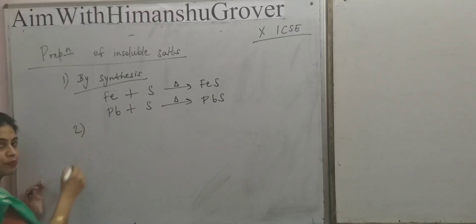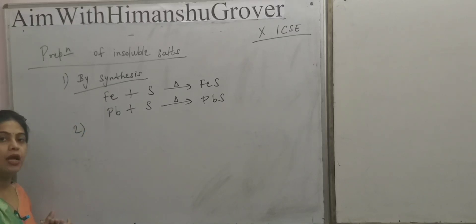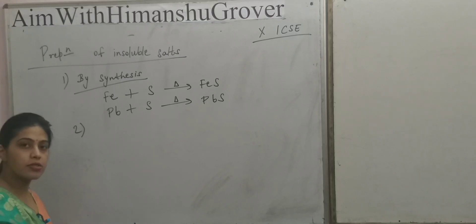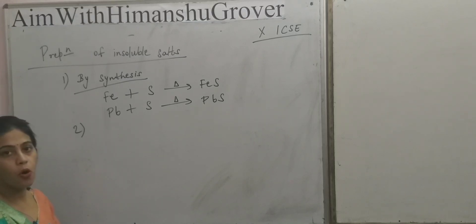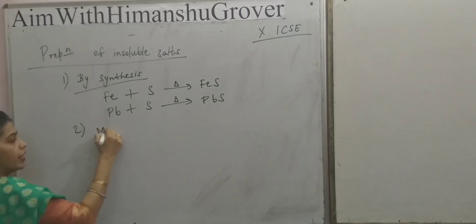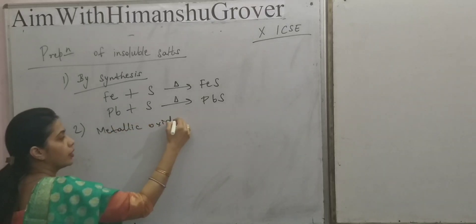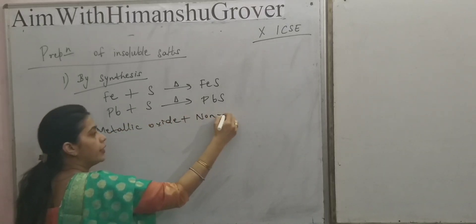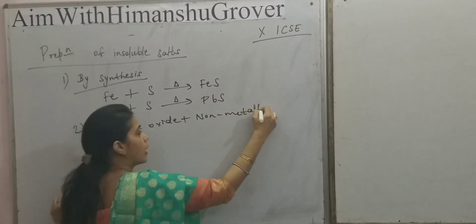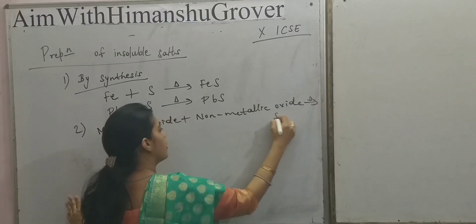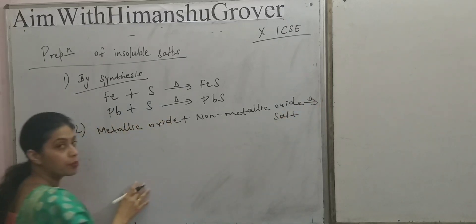The second method of preparing an insoluble salt is also by direct combination, but here direct combination of two compounds takes place. One compound is a metallic oxide and the second one is a non-metallic oxide. When metallic oxide is heated with non-metallic oxide, an insoluble salt is prepared.